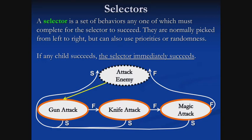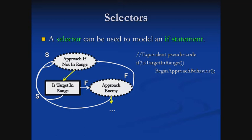Selectors can also be used to model if statements. If this, do that. So I might want to write a behavior approach if not in range. I only want to move into range of the target if I'm not already in range. Below we can see a selector, approach if not in range. Its first node is a conditional, is target in range. If is target in range returns true, then we're done. We're already in range, we don't need to approach. And approach if not in range will also return success. If is target in range returns failure, it's not in range, well now we'll start approaching the enemy. Approach enemy will return success once it has approached the enemy and now we are in range, or it will return failure once we're done and we have failed to approach the enemy. So we can see the code to the right, the equivalent pseudo code. If not target in range, then begin that approach enemy behavior.